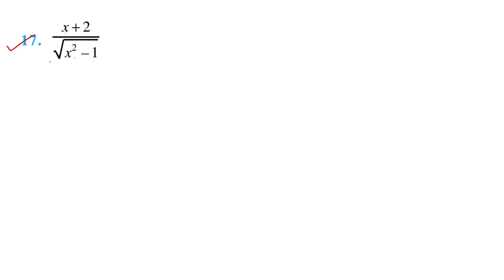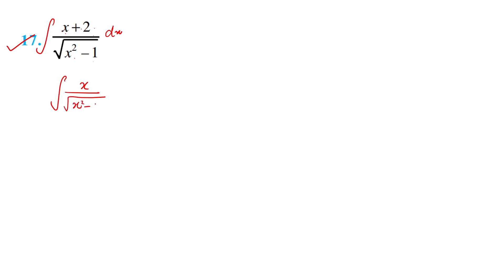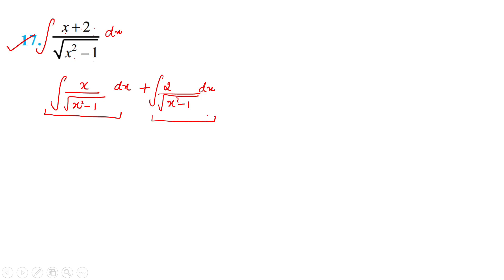Next let's go to question 17, the last question of today's video. We have to integrate (x + 2)/√(x² - 1) dx. When we differentiate x² - 1, we get 2x, which partially relates to the numerator. So we split the integral into two parts: I₁ = ∫x/√(x² - 1) dx and I₂ = ∫2/√(x² - 1) dx.